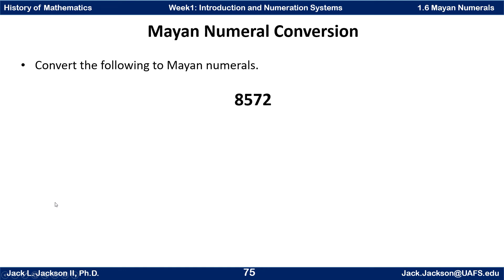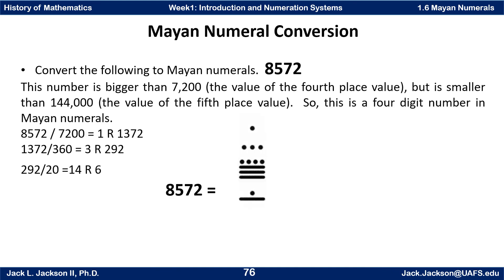So convert the following to Mayan numerals: 8,572. See if you can work this out on your own and come back to check your answer — press pause now. Hopefully, if you've seen how we did this for earlier types of numbers like Babylonian, you should be able to figure out what to do here and translate that.